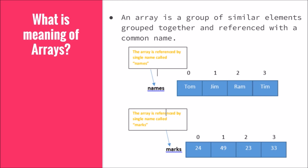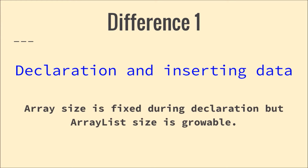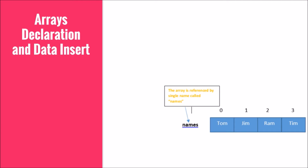Now let's go into more details about the differences between arrays and ArrayLists. The first difference is the manner in which they are declared and how you insert data. Array size is fixed during declaration itself, whereas ArrayList size is growable — it can keep on growing. But once you declare an array's size, you cannot change it.